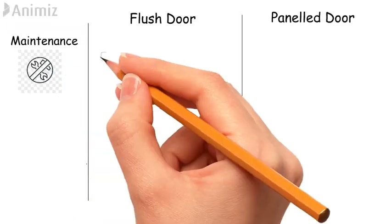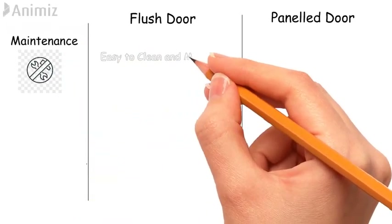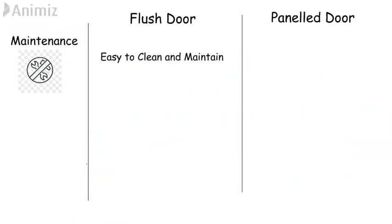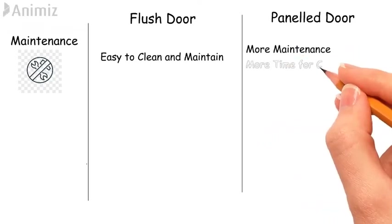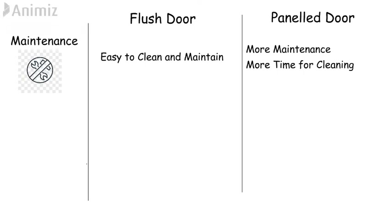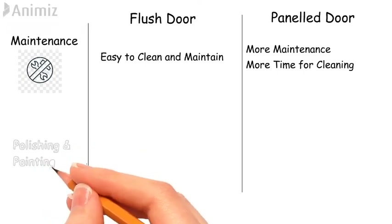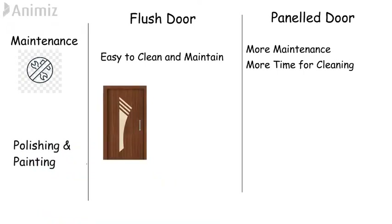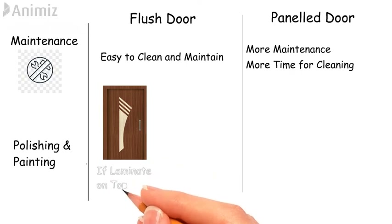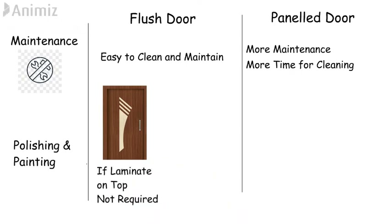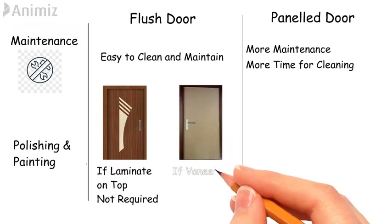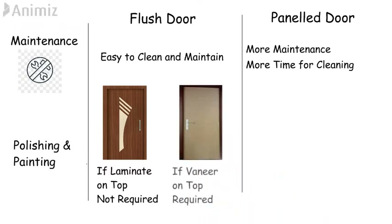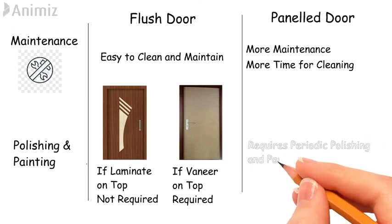Maintenance: Flush doors have plain shutters, so they are easy to clean and maintain, whereas panel doors require more maintenance and take more time for cleaning because of the grooves. Polishing and painting: In the case of a flush door, if it has laminate on top then there is no question of polishing or painting, but if you have veneer on top then polishing and painting may be required. Panel doors require periodic polishing and painting.